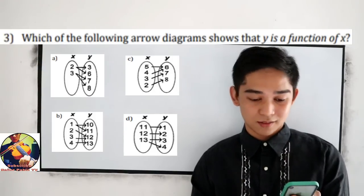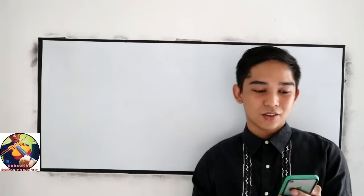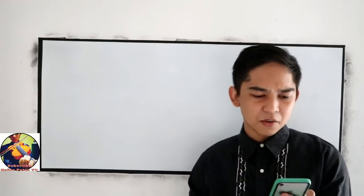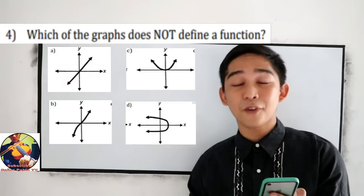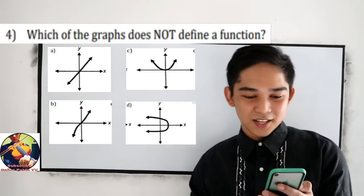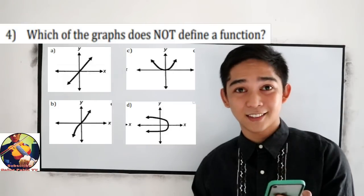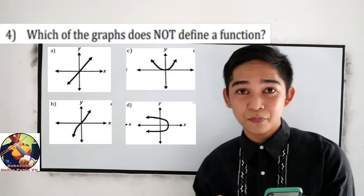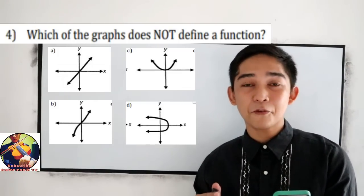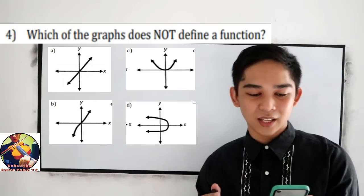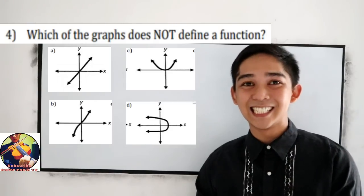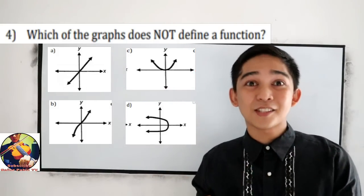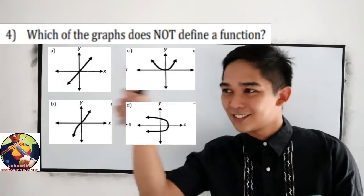Letter D also has many-to-1, which is not a function. So to summarize: number 1 is B, number 2 is B, number 3 is C. Next, number 4: Which of the following graphs does not define a function? We're going to use the vertical line test. The only graph in number 4 that does not define a function is letter D. Why? Because if we use the vertical line test, it will touch the graph twice.